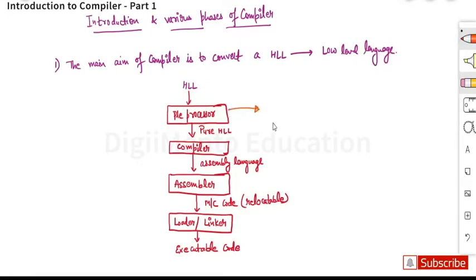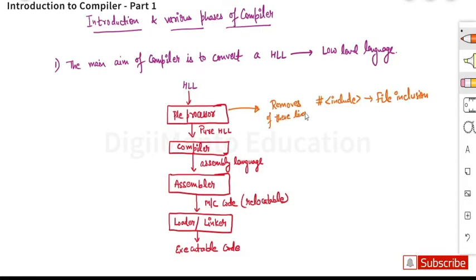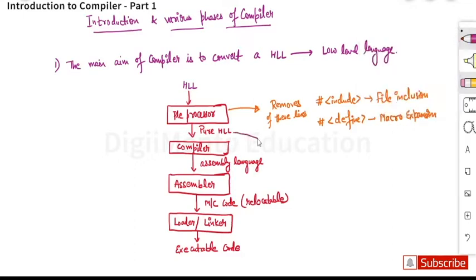Now we will study each stage separately. The function of the preprocessor is that it removes all the hash-include lines — that means all the file inclusions in your code are removed by the preprocessor. It also handles macro expansion, like the define directive, and removes those as well.